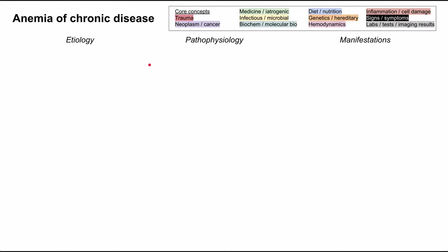The core driving force behind the pathophysiology in anemia of chronic disease is inflammation. In fact, this disease is actually called anemia of inflammation in some of the literature. Inflammation causes large disruptions in hormones and cytokines throughout the body. The cytokine that's highly relevant here is IL-6, and another hormone that's very relevant is hepcidin.